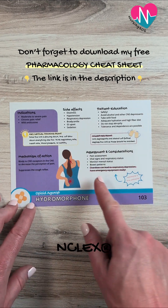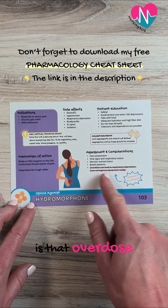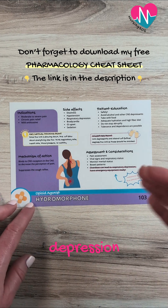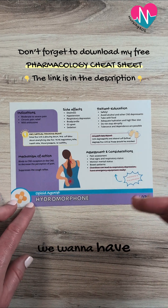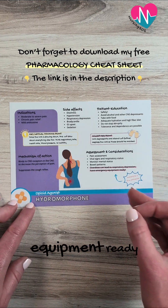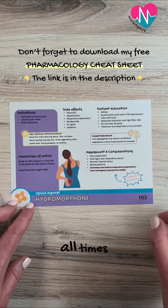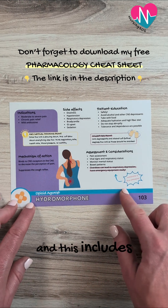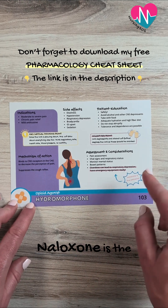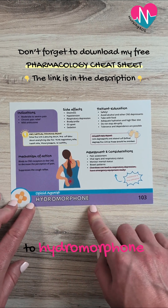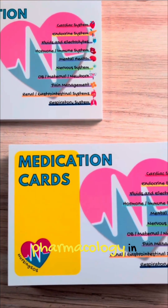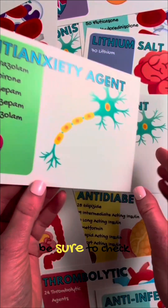A key thing to know for the NCLEX is that overdose can lead to respiratory depression. We want to have medical emergency equipment ready at all times, and this includes naloxone, which is the antidote to hydromorphone.